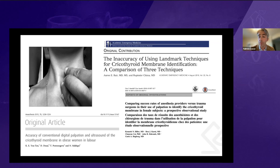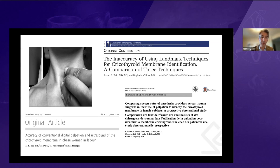First, a few studies were published about the common-sense technique of identifying the cricothyroid membrane by palpation. These studies looked at the accuracy of palpation of neck landmarks and the cricothyroid membrane. They showed that among several professionals in different specialties — anesthesiologists, emergency department physicians, and trauma surgeons — accuracy was only around 50%. One study from our group found that in specific populations like obese women or parturients in labor, this accuracy could go as low as 39%.